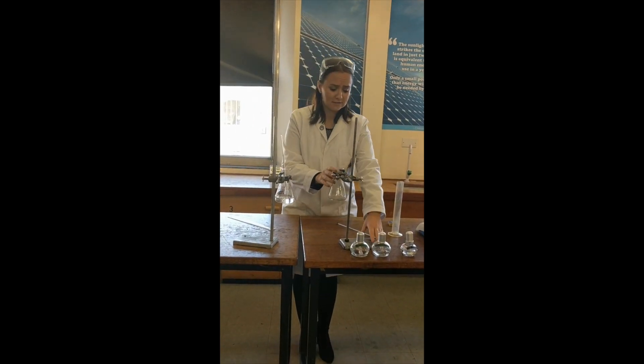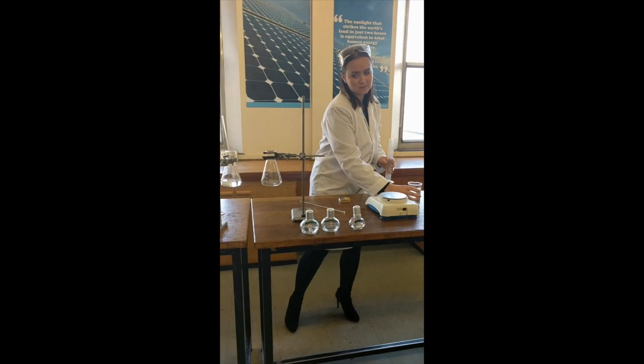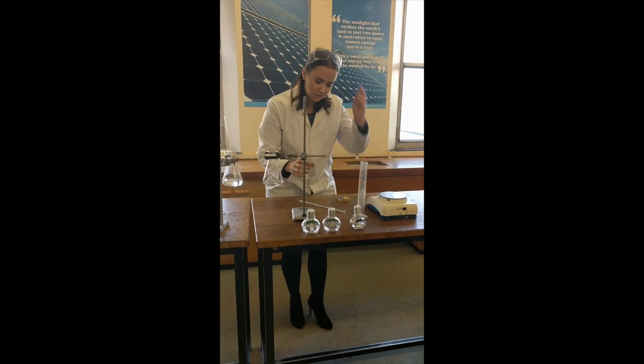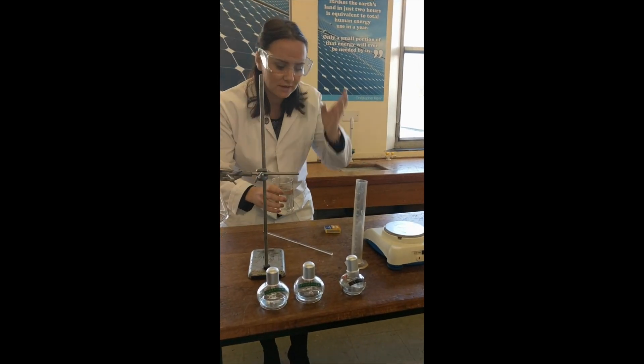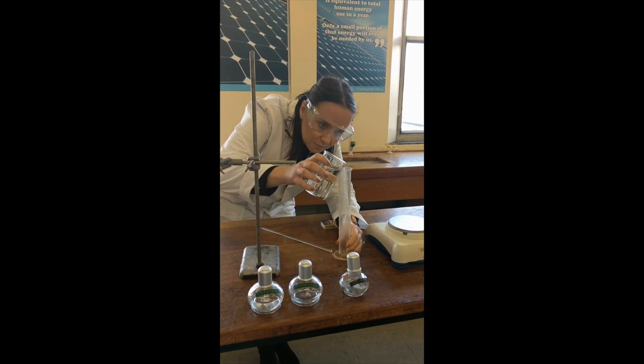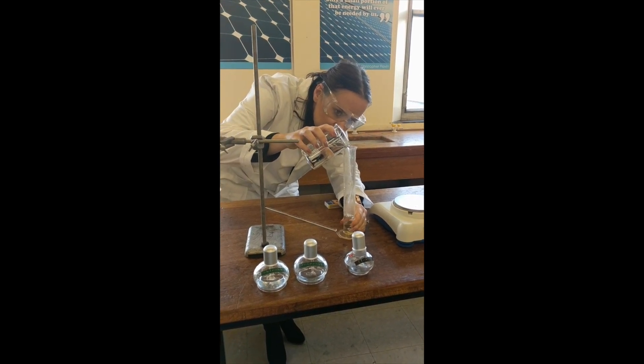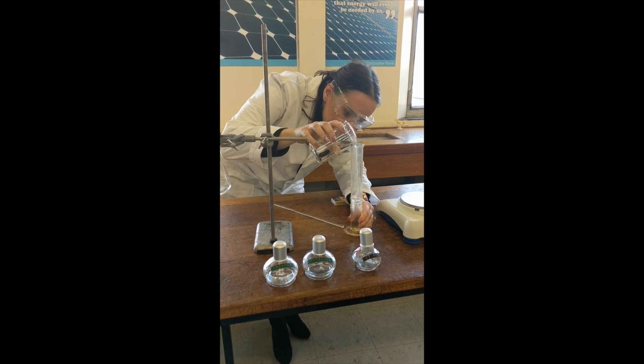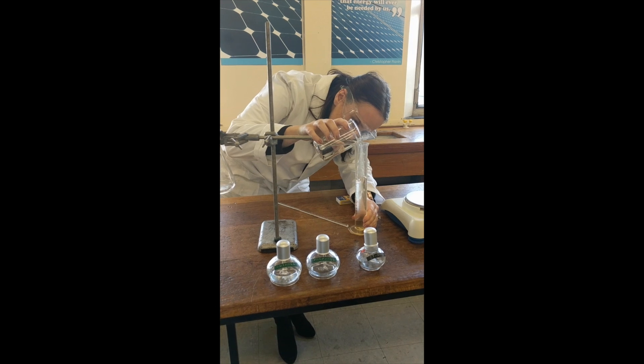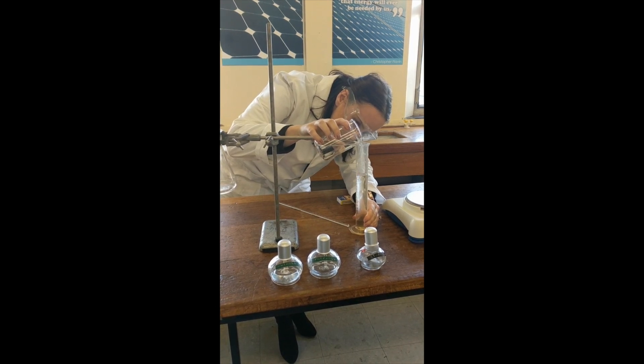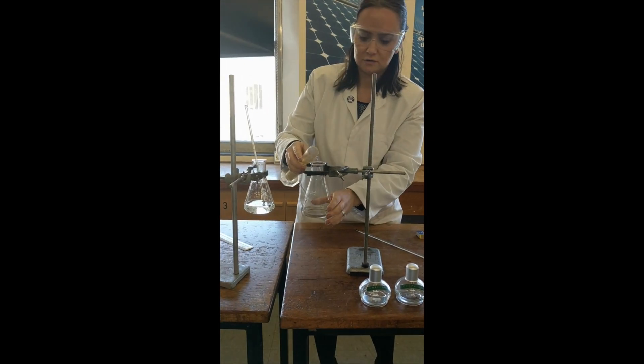I'm going to have a conical flask set up on a lamp stand. We're going to need to measure out a hundred centimeter cubed of water using a measuring cylinder. So again we're coming down to eye level to make sure we can measure the bottom of the meniscus. And we'll pour that into the conical flask.